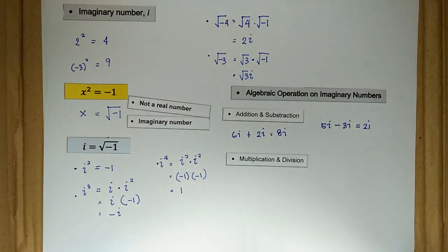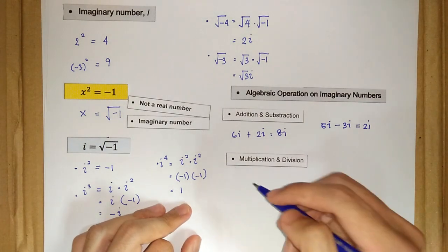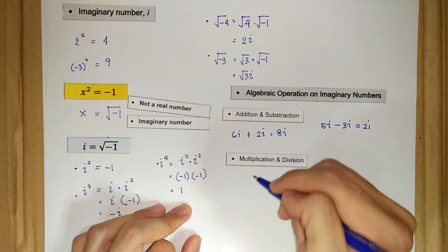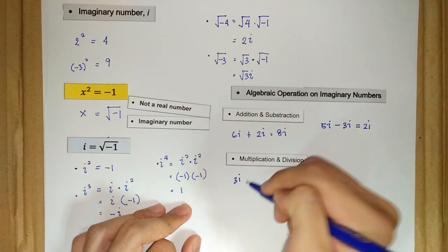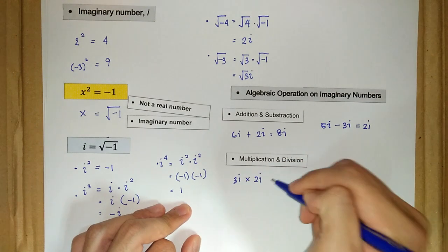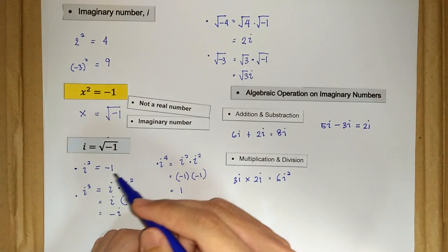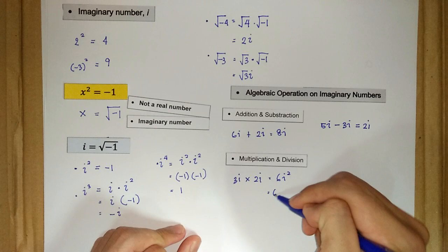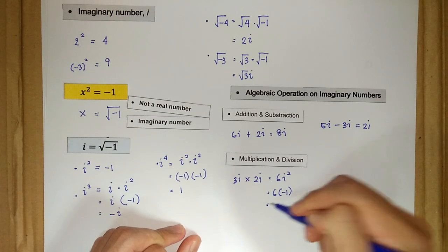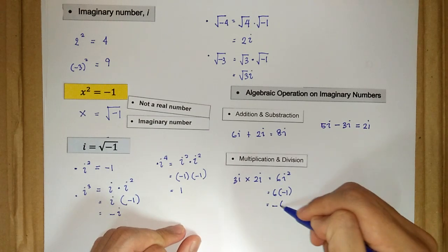We may also perform multiplication and division on imaginary numbers, which will give us a real number. For instance, 3i times 2i equals 6i squared. Since i squared is negative 1, we have 6 times negative 1, which equals negative 6.